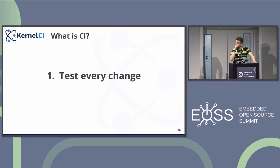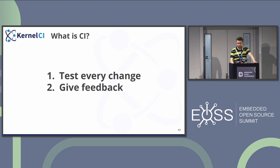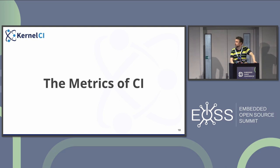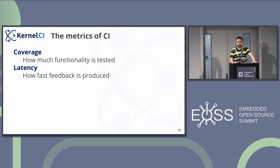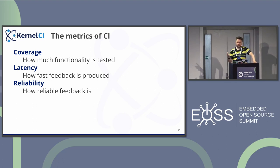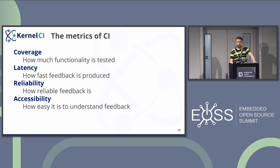For our purposes, I'm going to simplify this. The main idea of CI — as you all know — is to test everything, test every change, as many changes as possible at every moment, and provide feedback. From that point of view we can define four base metrics: how much functionality is tested (coverage); latency — how fast feedback is produced, is it coming in after a few hours or later; reliability — how much can you trust the results, can you get a failure when it's actually a failure; and finally accessibility — how easily can you figure out what's actually broken and what you need to fix.